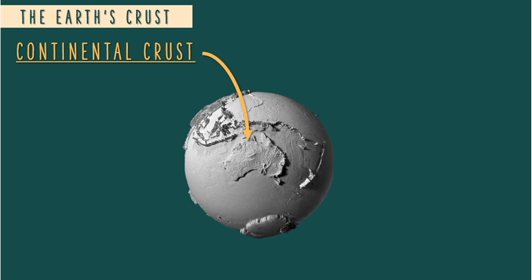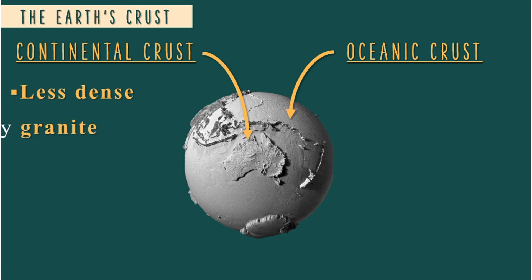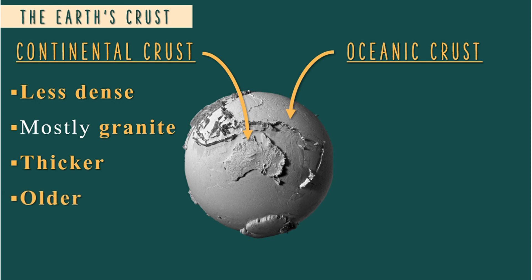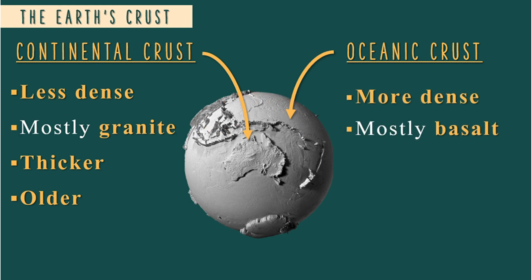Continental crust is the layer of rock which forms the continents, while oceanic crust is a thin layer of crust that overlies the ocean basins. Continental crust is less dense, mostly granite, thicker, and older than oceanic crust, while oceanic crust is more dense, mostly basalt rock, thinner, and younger than continental crust.